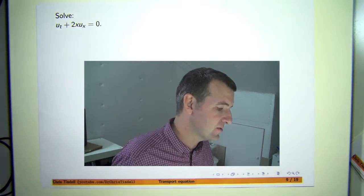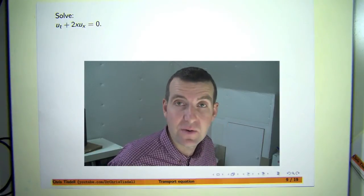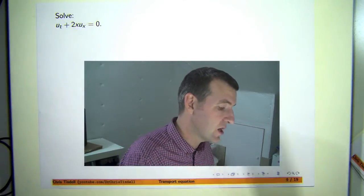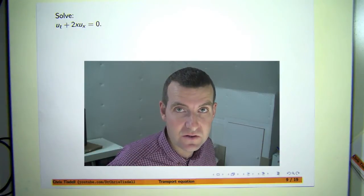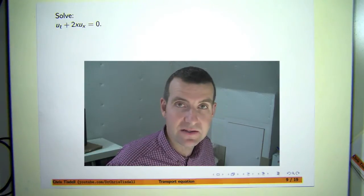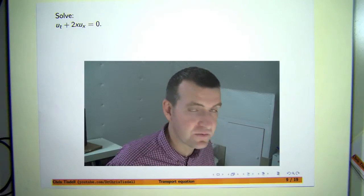Now, this particular equation is not like the equations I've looked at before because the coefficient of u sub x, du dx, is not a constant. Okay, here it's 2x. So how do we solve this problem?